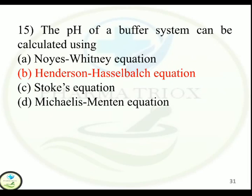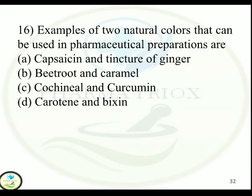Question 16: Examples of two natural colors that can be used in pharmaceutical preparations are — Option A: Capsaicin and tincture of ginger. Option B: Beetroot and caramel. Option C: Cochineal and curcumin. Option D: Carotin and bixin. Correct answer is Option D — carotin and bixin.